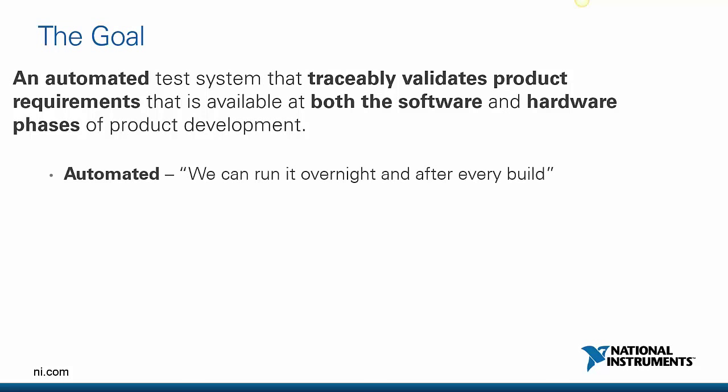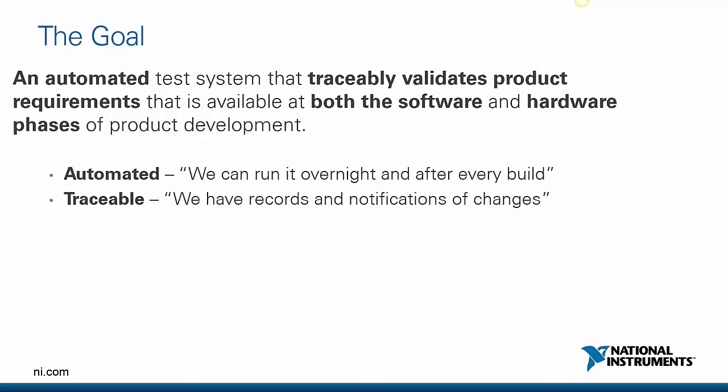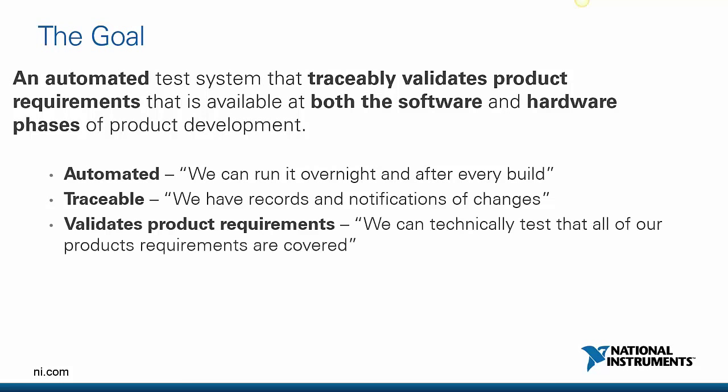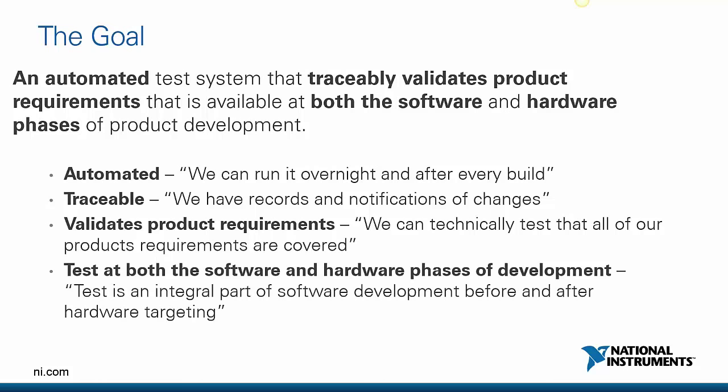We'll be doing field evaluations and field tests as well as simulation-based tests. The goal is to move as many of these tests as early as possible in the design process. The goal of creating an automated test system is to traceably validate product requirements, available in both software and hardware phases. When we talk about automation, we want to run things overnight — click a button and have our test framework execute both regression tests and a variety of other tests. It needs to be traceable, mapping data back to requirements, and needs to integrate automatically into our product requirements databases.